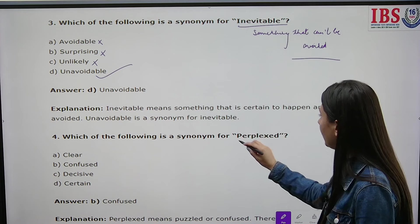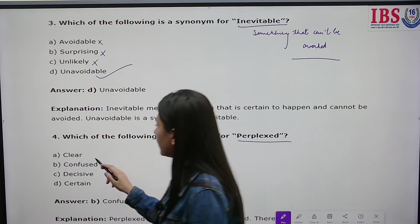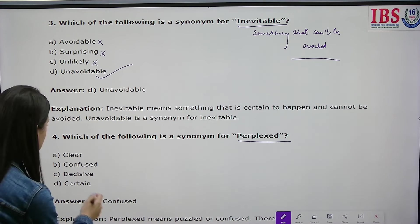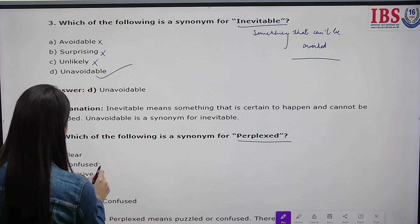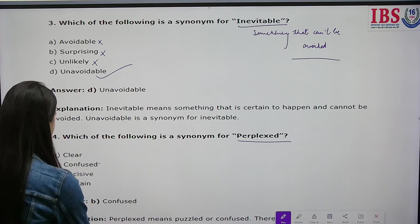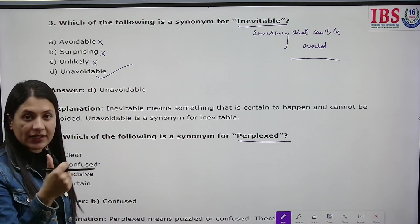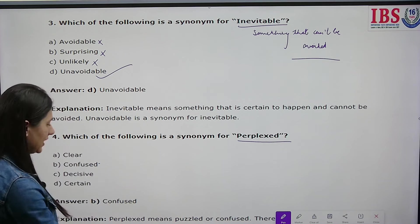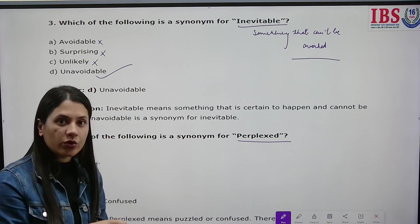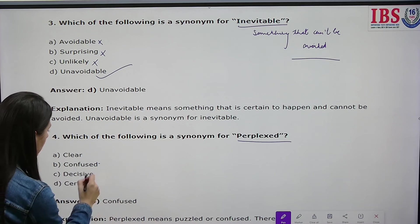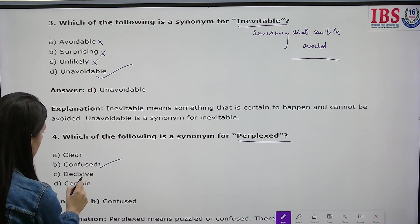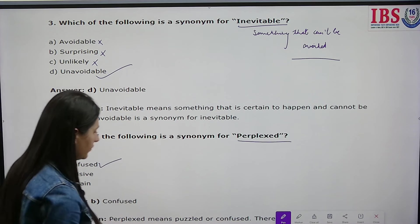Which of the following is a synonym for 'perplexed'? The options are clear, confused, decisive, and certain. Clear means having full clarity. Decisive means having the power to make decisions. Certain means being sure about something. Confused means being completely puzzled — and perplexed also means confused, so confused is the correct answer.